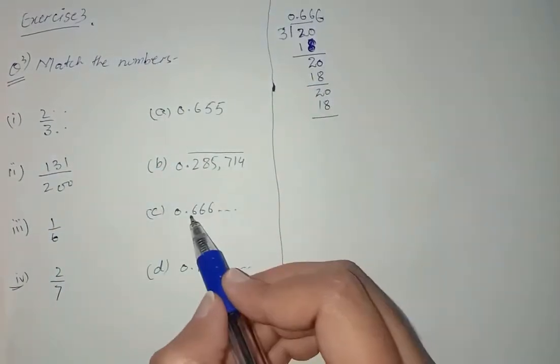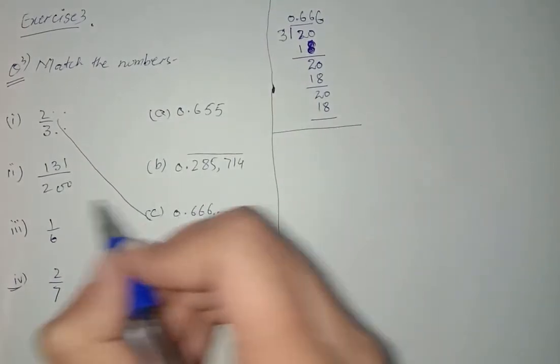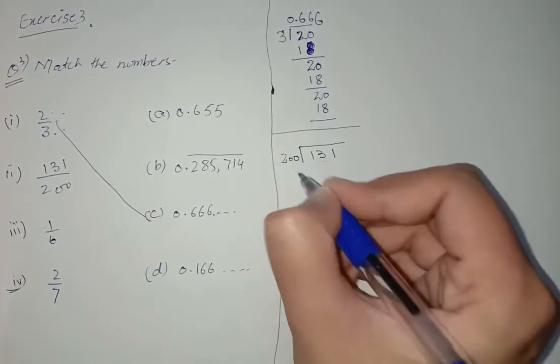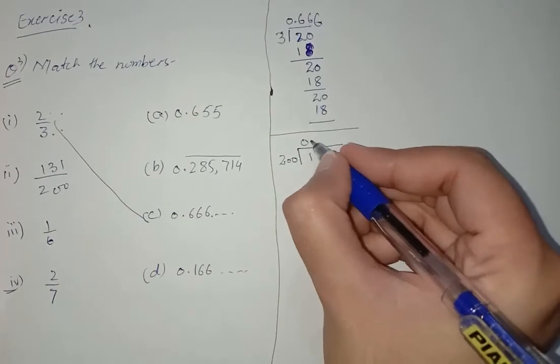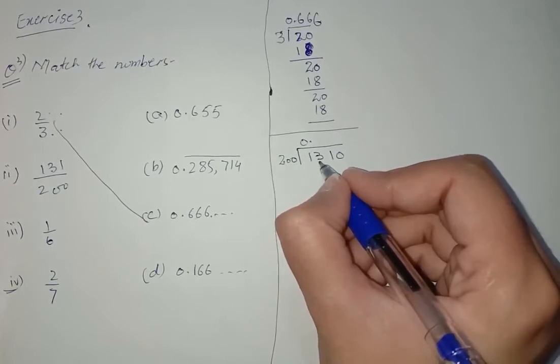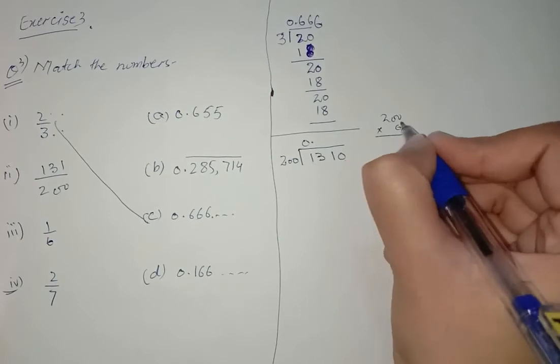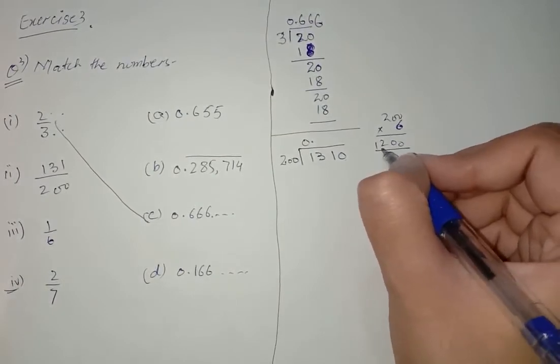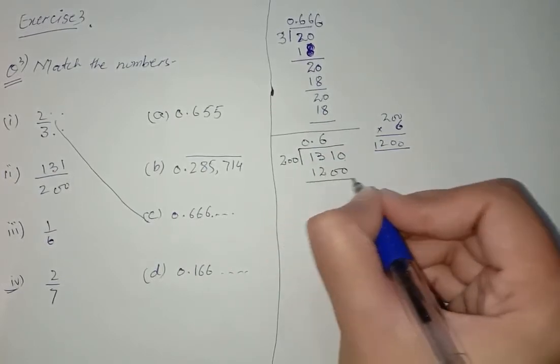Now move towards next. This is 131 divided with 200. 131 doesn't come in the table of 2, so we can place a 0 point and 0. If we multiply 200 with 6, this is 1200. 1400 is bigger than 131, so 200 is bigger, so we can place 6. Now we can subtract, this is 110. We can place one more 0.